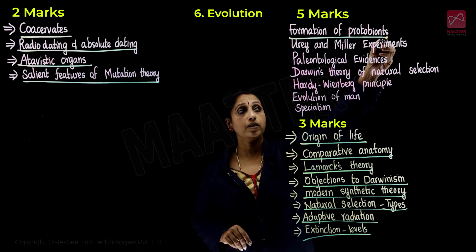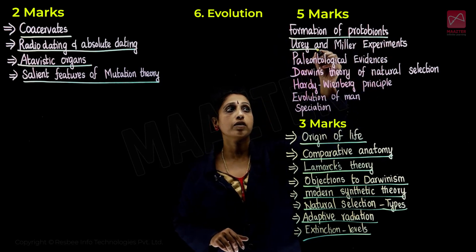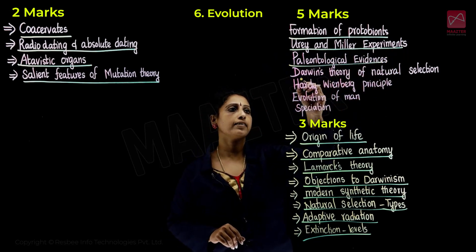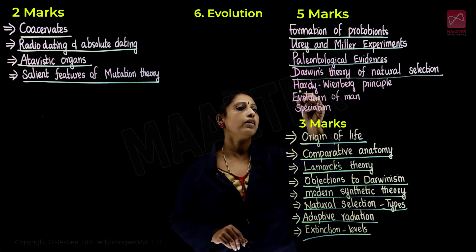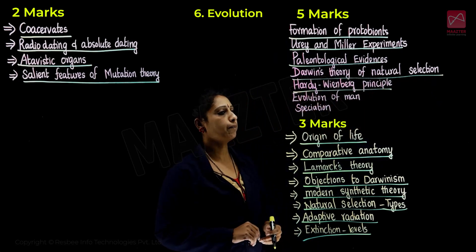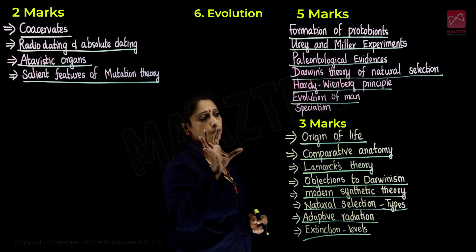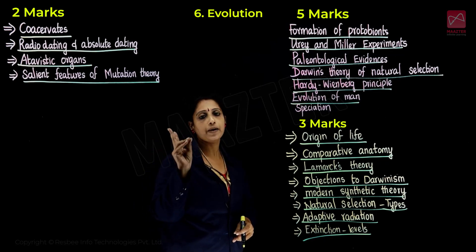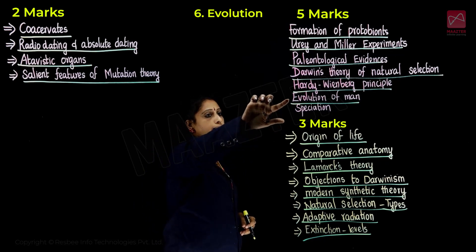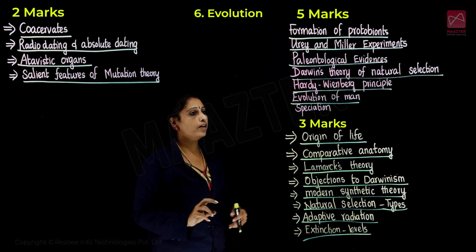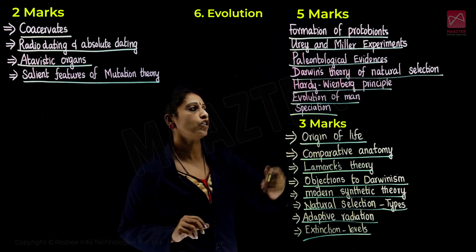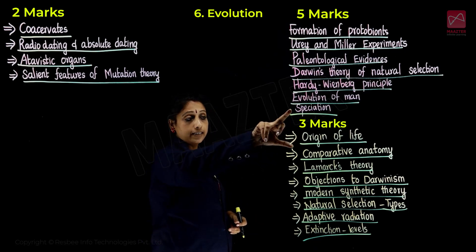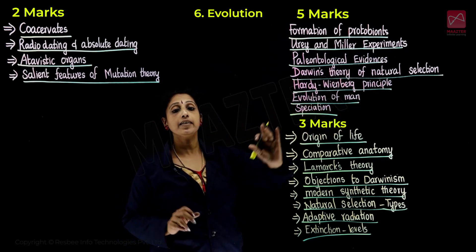Five more questions include formation of protobionts, the Urey and Miller experiment which is the most important question to study, paleontological evidences, Darwin's theory of natural selection, the Hardy-Weinberg principle, and evolution of man. Finally, speciation — sympatric and allopatric speciation — that's all from evolution.